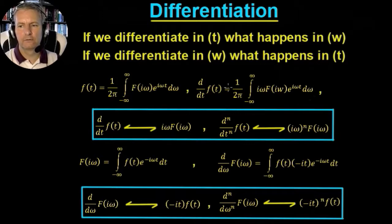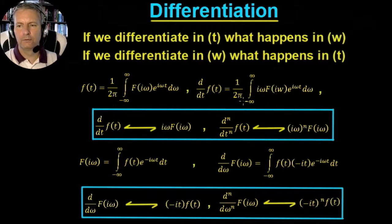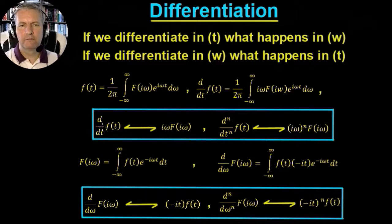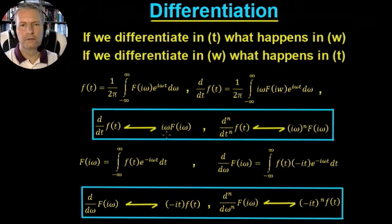So what we can say is whenever we differentiate a function with respect to time, we're left with a factor of iω. What's left over is 1 over 2π, the integral from minus infinity to infinity of f(iω) e to the iωt dω, which is just the Fourier transform of f(t). So differentiating a function in the time domain is equivalent to multiplying its frequency-domain representation f(iω) by iω. That's one of the transform pairs from this video.